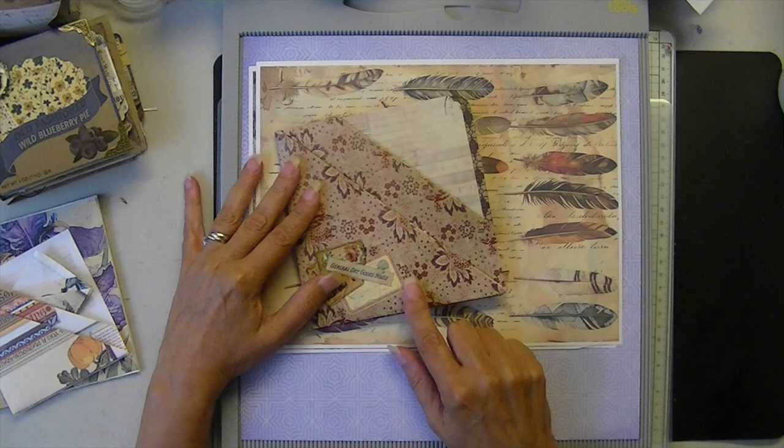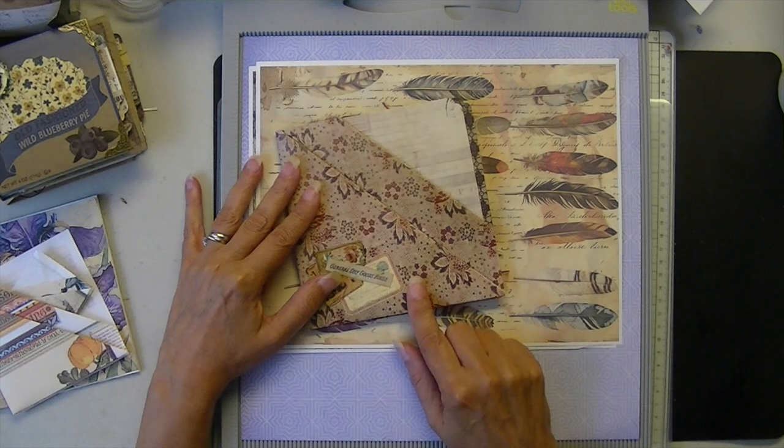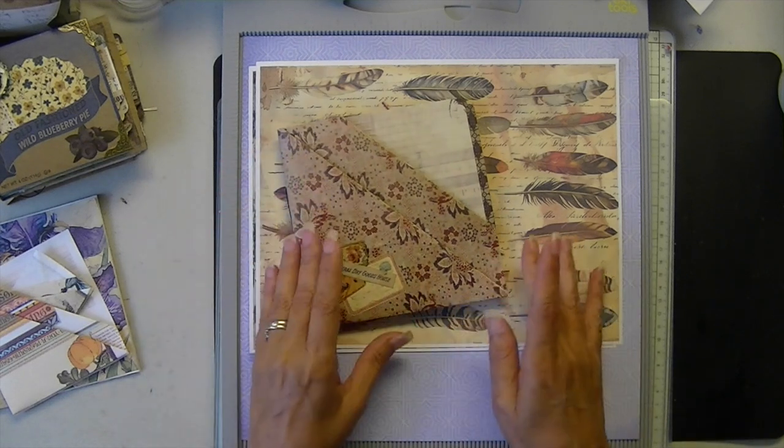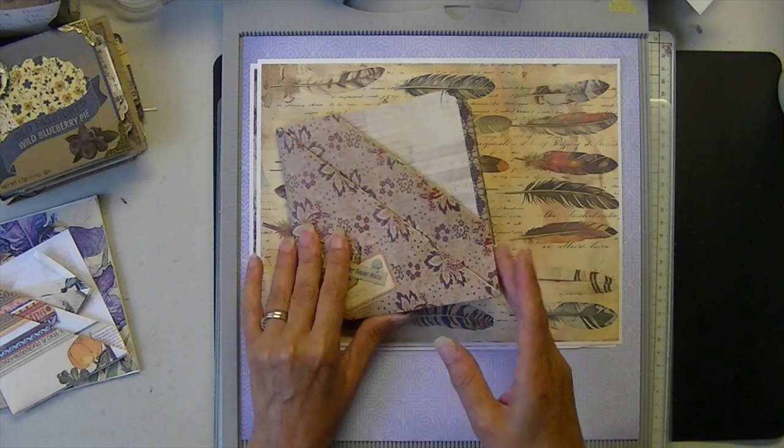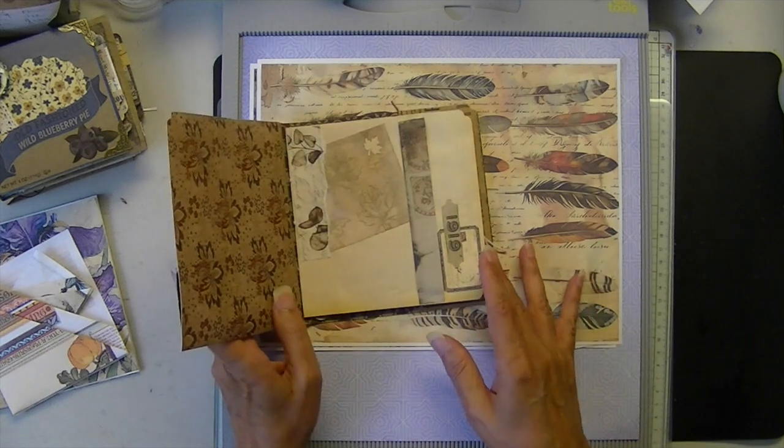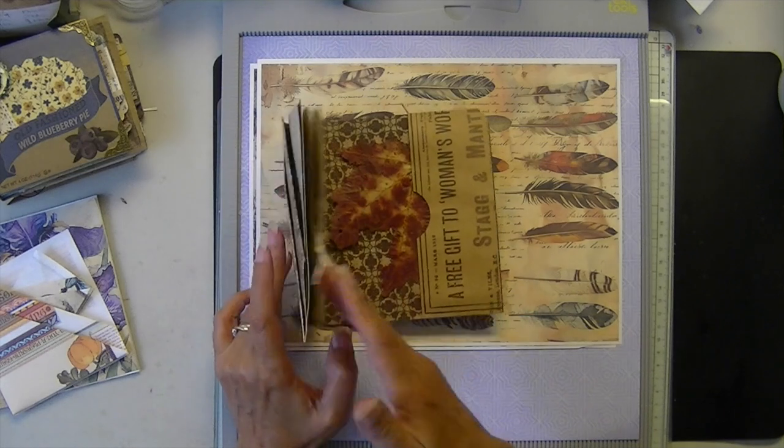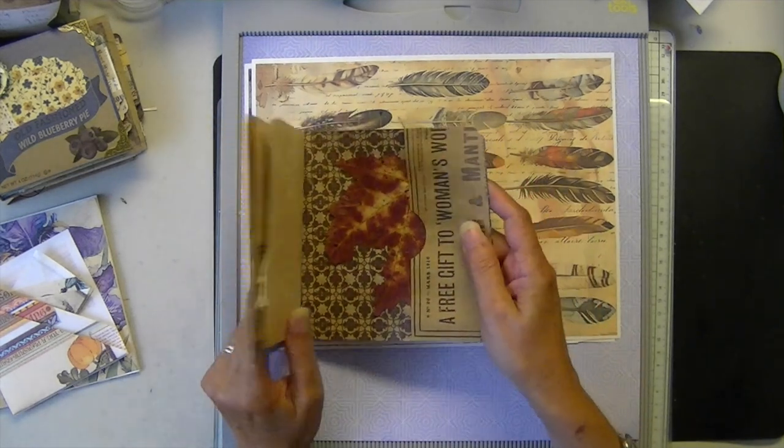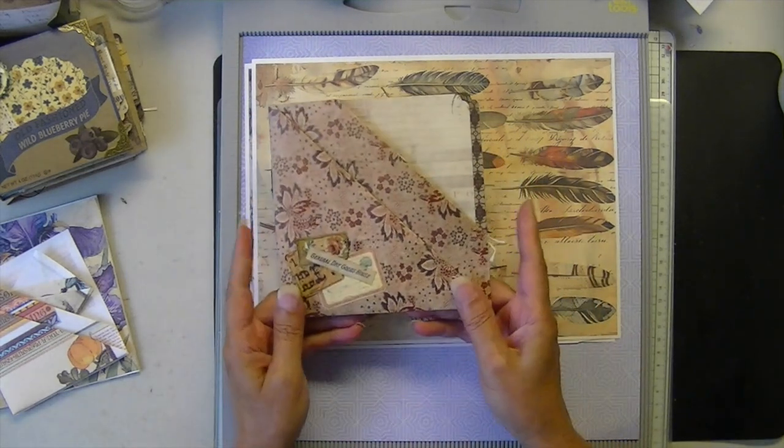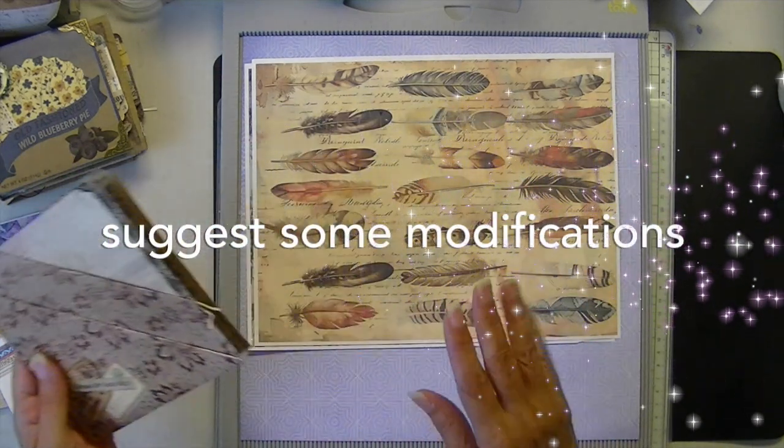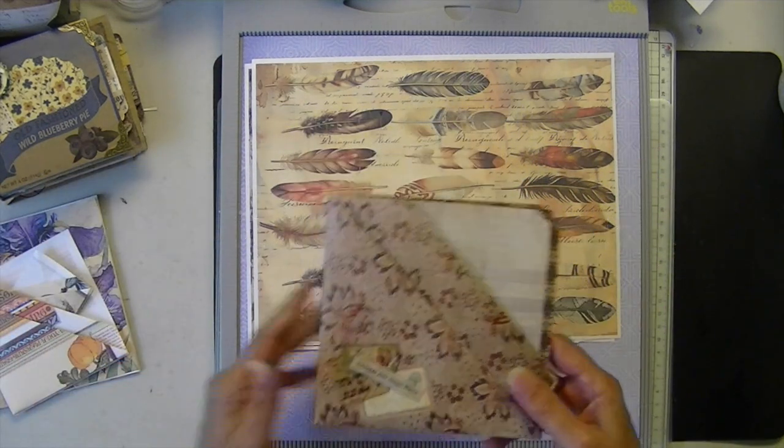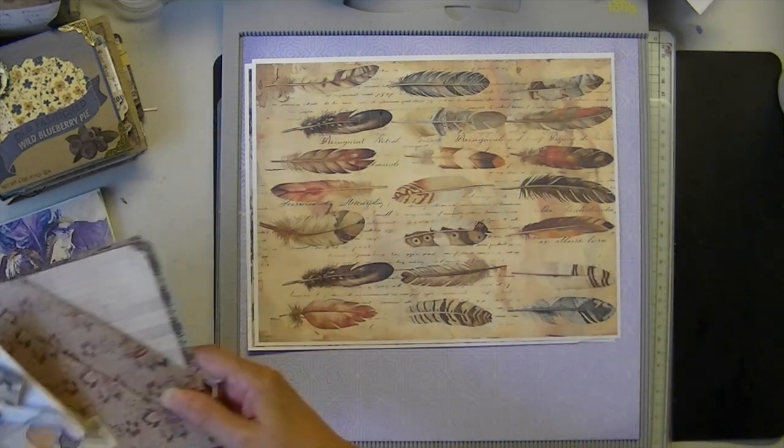So today we're going to do another 12 by 12, super simple. I don't think I've done this in a video, but I did a flip through of one. So I'm going to make some modifications, and that's what we're going to do today. Super simple 12 by 12.